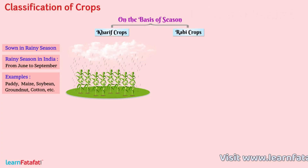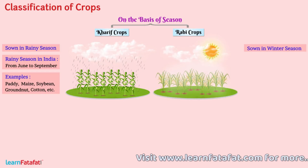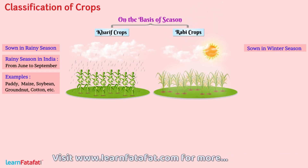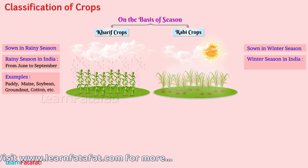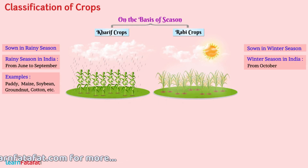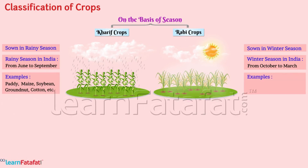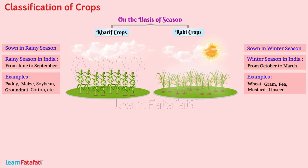The crops which are sown in the winter season are called Rabi crops. In India, the winter season is from October to March. Some of the Rabi crops are wheat, gram, pea, mustard, and linseed.